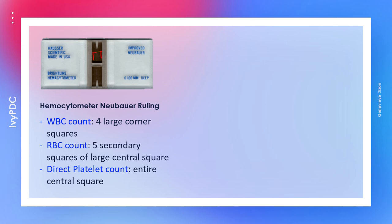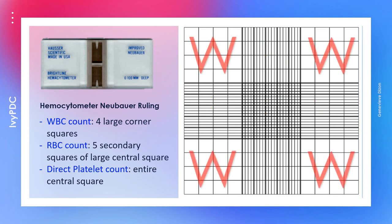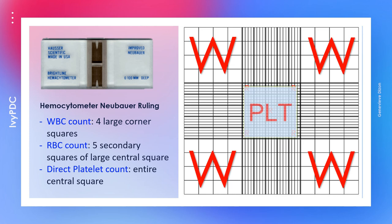If we magnify the counting area through the microscope, the grid is divided into nine large squares, but we will not be using all of them — it depends on what kind of cells we intend to count. For white blood cells, we count only the four large corner squares. For red blood cells, we count only the five secondary squares in the central square. For platelets, we count all the platelets found in the central square.